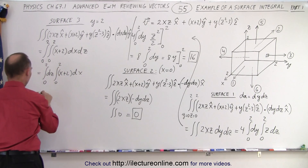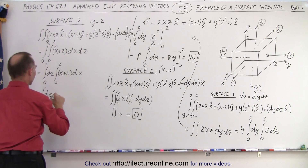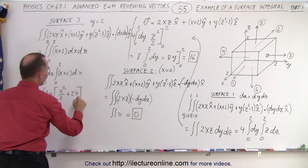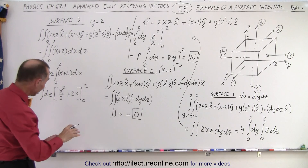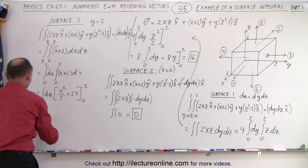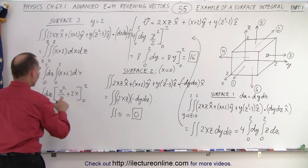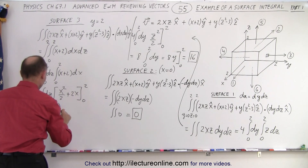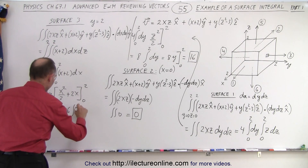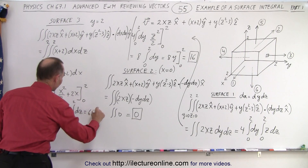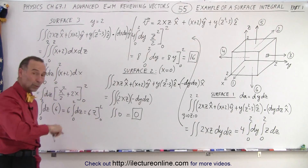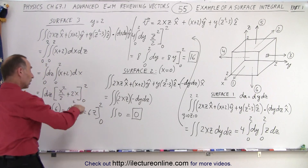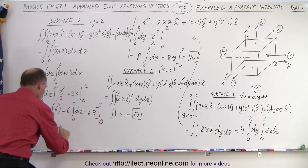We integrate (x + 2) first, giving x squared over 2 plus 2x, evaluated from 0 to 2. Plugging in the lower limit gives nothing. Plugging in the upper limit: 4 divided by 2 is 2, plus 4, which is 6. So this gives us 6 times the integral of dz from 0 to 2, which equals 6 times z evaluated from 0 to 2. Plugging in the lower limit gives 0, and plugging in the upper limit gives 6 times 2, which equals 12.